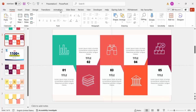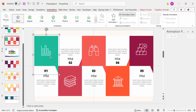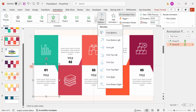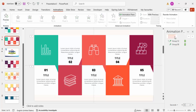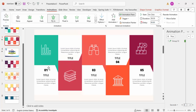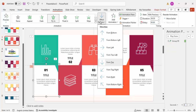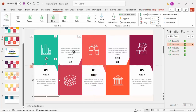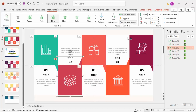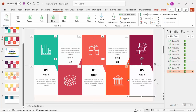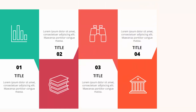Now set up the animations. Go to Animations and enable the Animation Pane. Select the two parts of the first group: make one fly in from the bottom and the other fly in from the top, both set to With Previous. For the next option, reverse it — top comes from bottom and bottom comes from top. Copy these animation effects alternately for options three, four, and five. When played in slideshow, options appear one by one as you click.